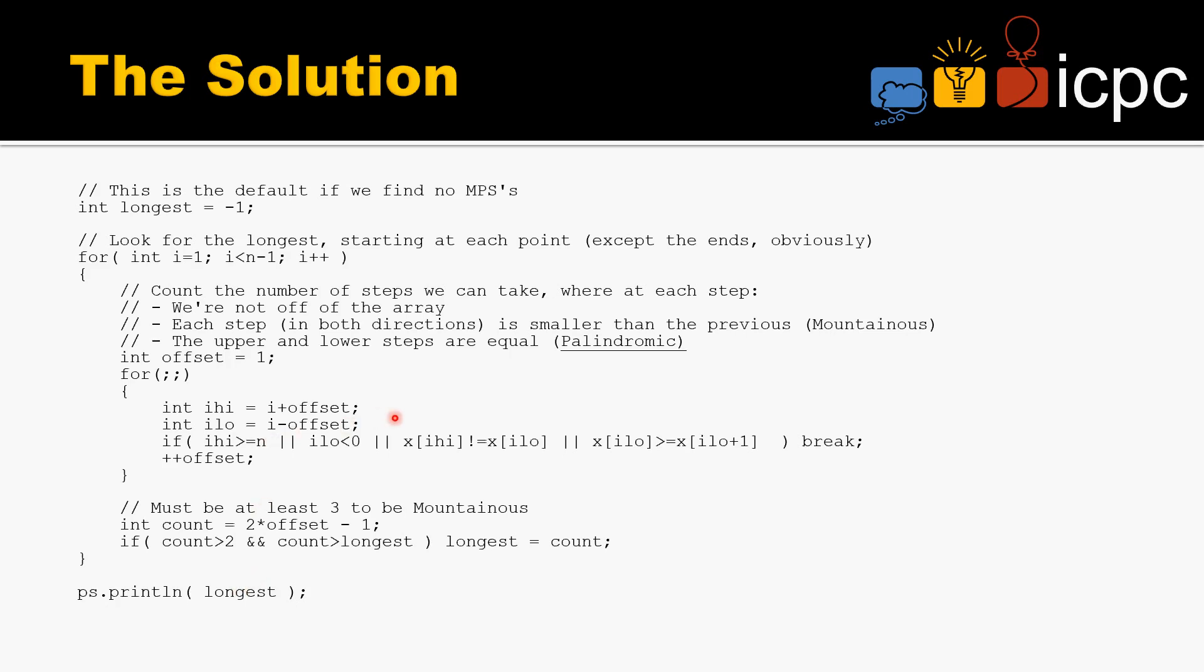If you think about this very hard, you'll see that no element is going to get looked at more than about 3 times. Even though we're doing multiple things per element, it is amortized order n. No matter what the length of the array is, this algorithm is going to finish in plenty of time. And that is the solution to MPS.